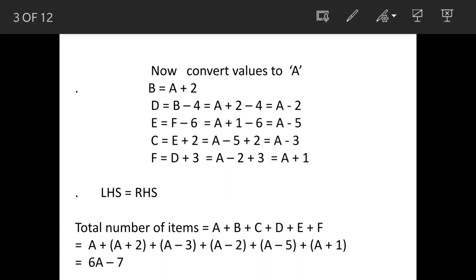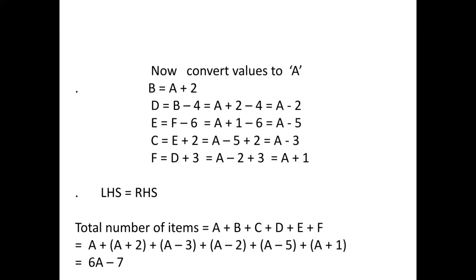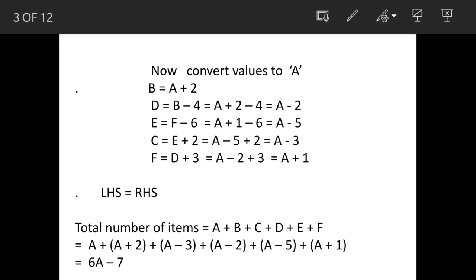Now we will convert all the values to a single term, that is A. A will remain A, and from B onwards when we substitute the values, we get the sum of A plus B plus C plus D plus E plus F equal to 6A minus 7.